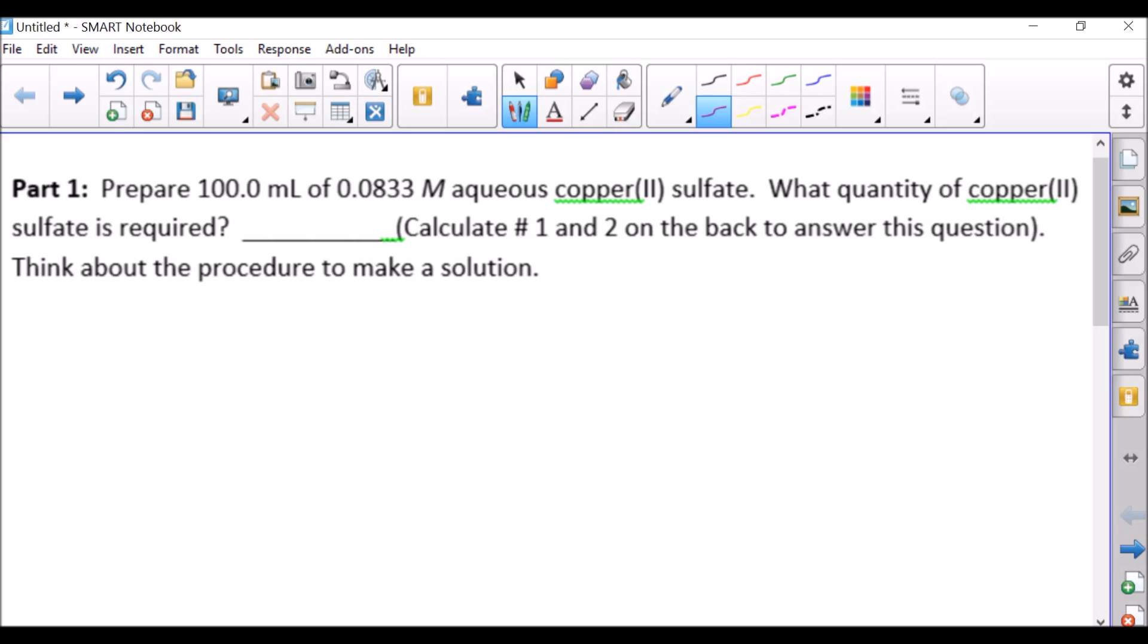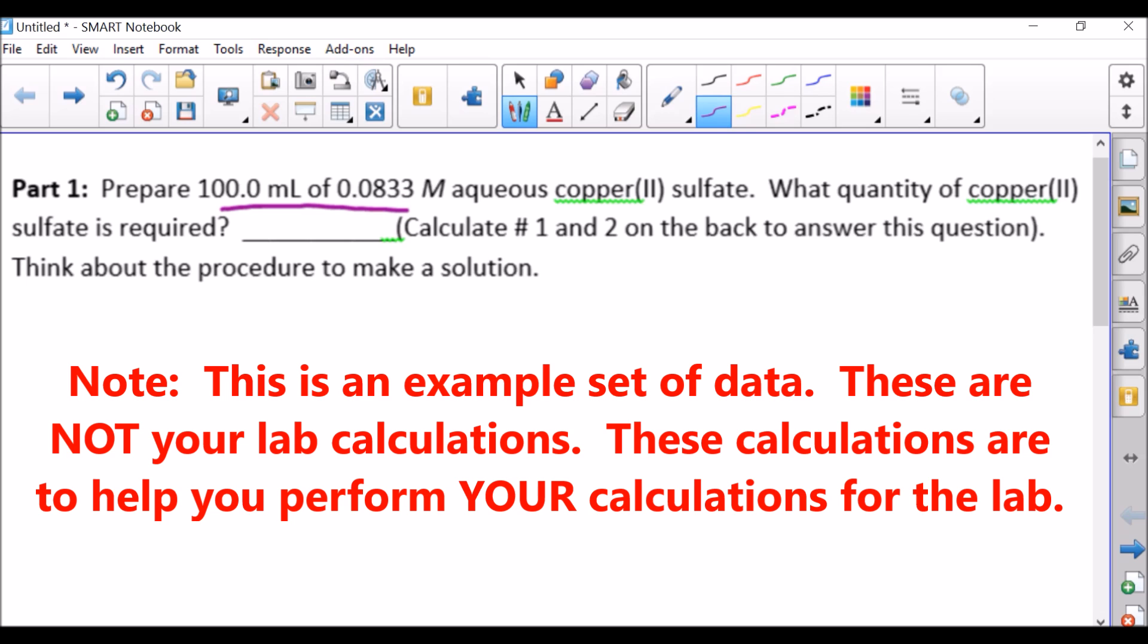Our first calculation is going to involve us to prepare 100 milliliters of a 0.0833 molar solution of copper(II) sulfate. Question asks, what quantity of copper(II) sulfate is required?